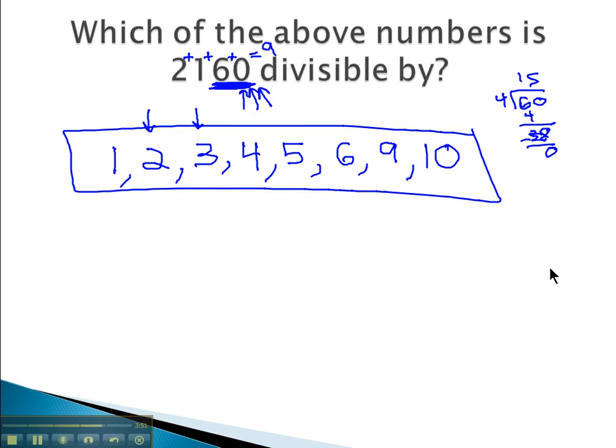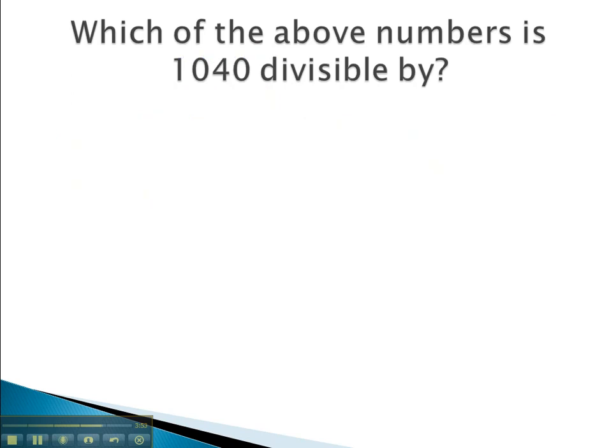Let's try another number. Let's take a look at 1040. We know one goes into it, because one goes into everything. To test two, the last digit is zero, which is even, so two goes into it. To test three, we'll add the digits together. One plus zero plus four plus zero equals five. Five's not divisible by three. Three won't work here.